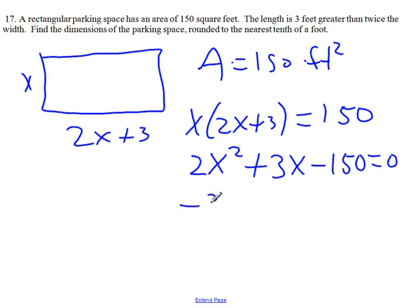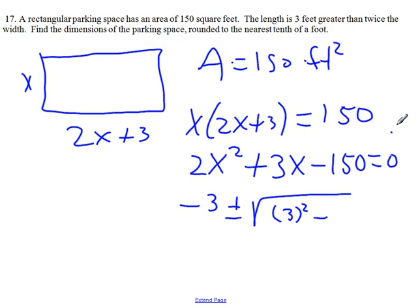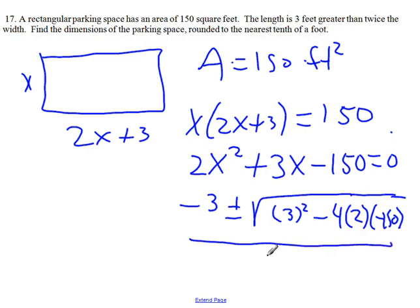Quadratic formula. So minus b plus or minus the square root of b squared minus 4 times a times c. Divided by 2a.